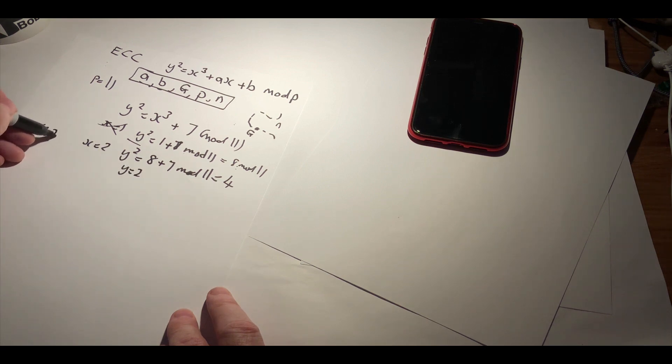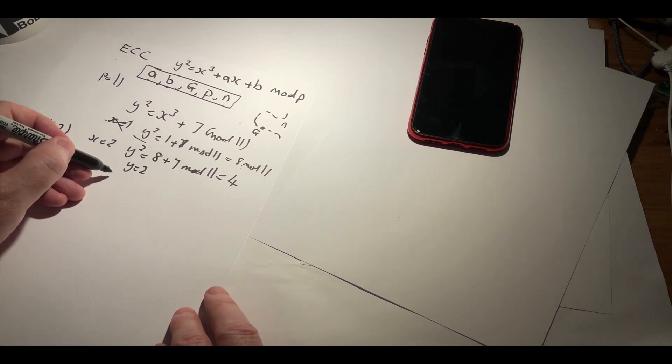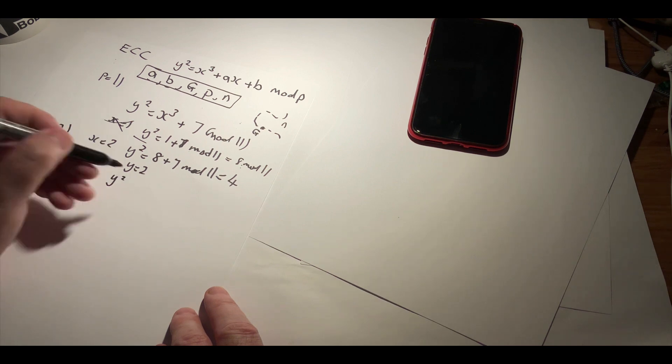So we have a point at 2 comma 2. We also have another point on the elliptic curve because there is another value for y squared.